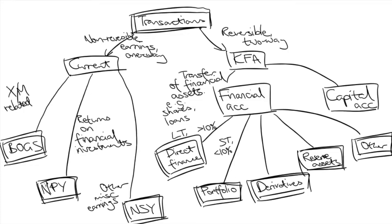The other investment subaccount includes other forms of reversible transfers of financial assets not categorized above. And finally, we have the capital account, which also records reversible transactions, but this time for non-financial assets such as intellectual assets like patents, copyrights, or franchising licenses.